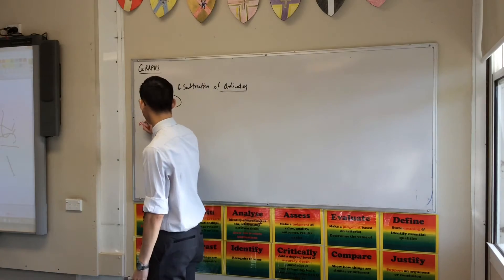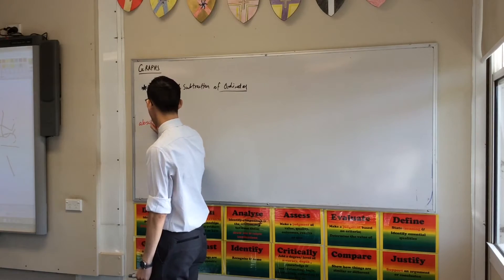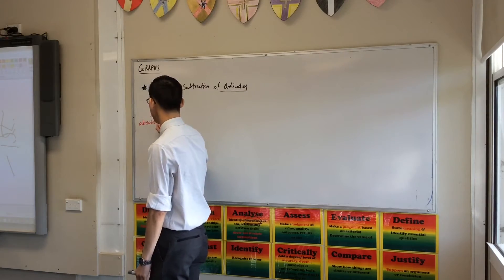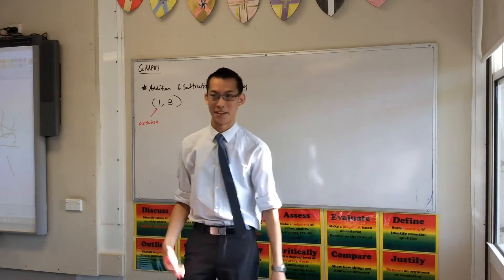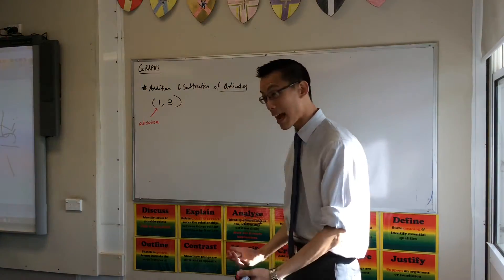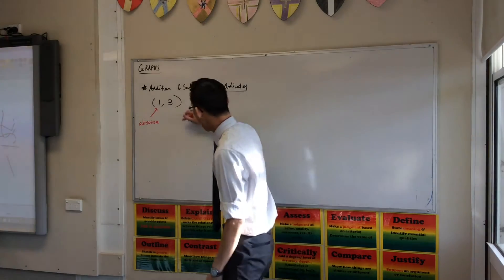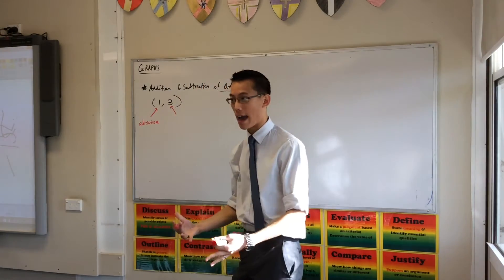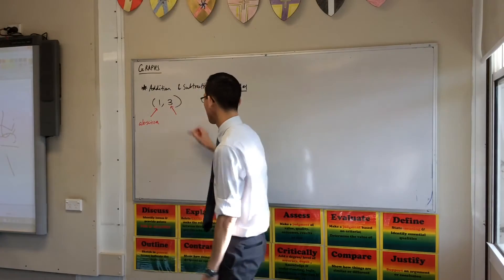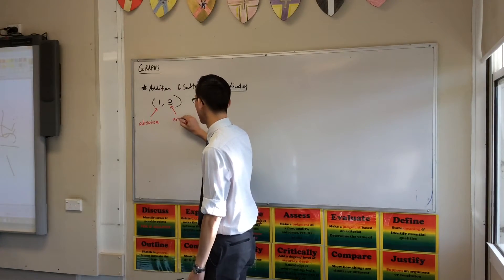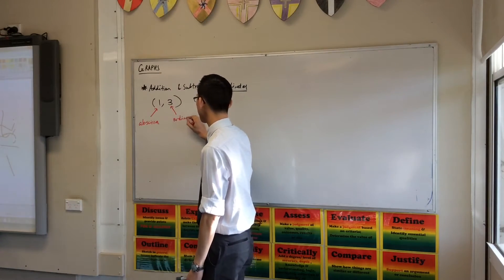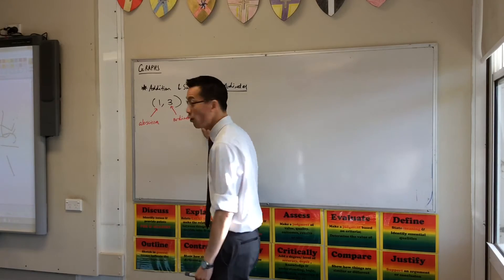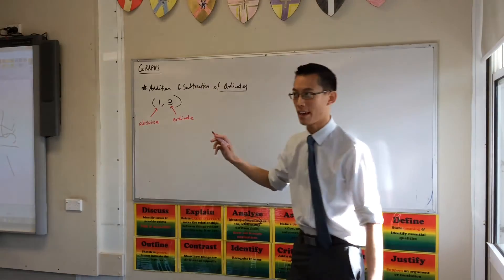It's called an abscissa. I don't know what it means yet, but you can go look it up if you like. That's what it's actually called. And this guy over here, the y, that's actually called, just by itself, an ordinate.